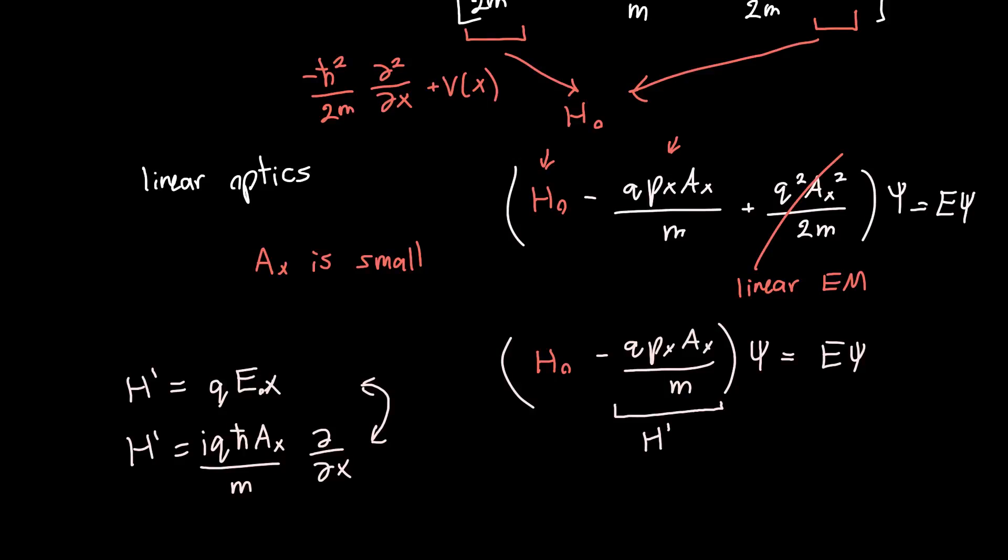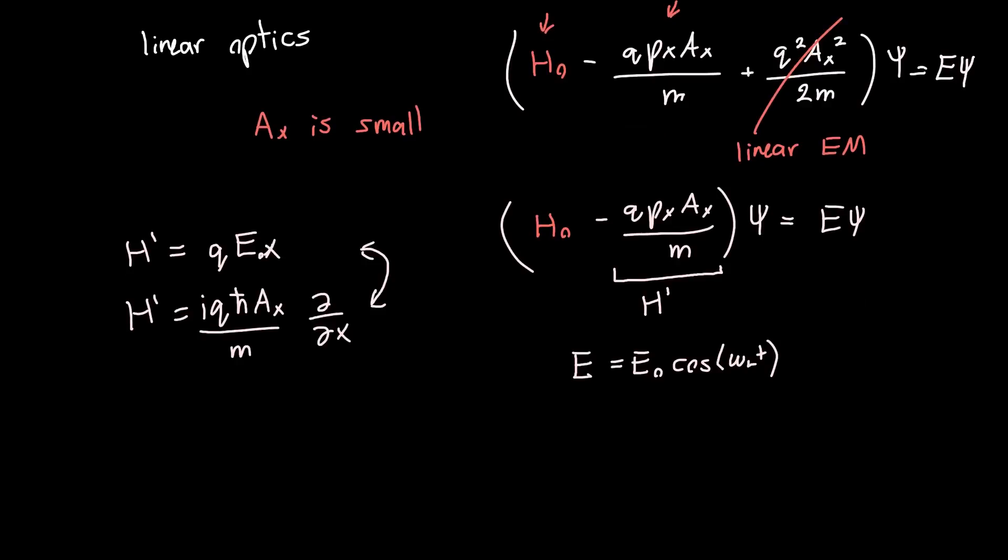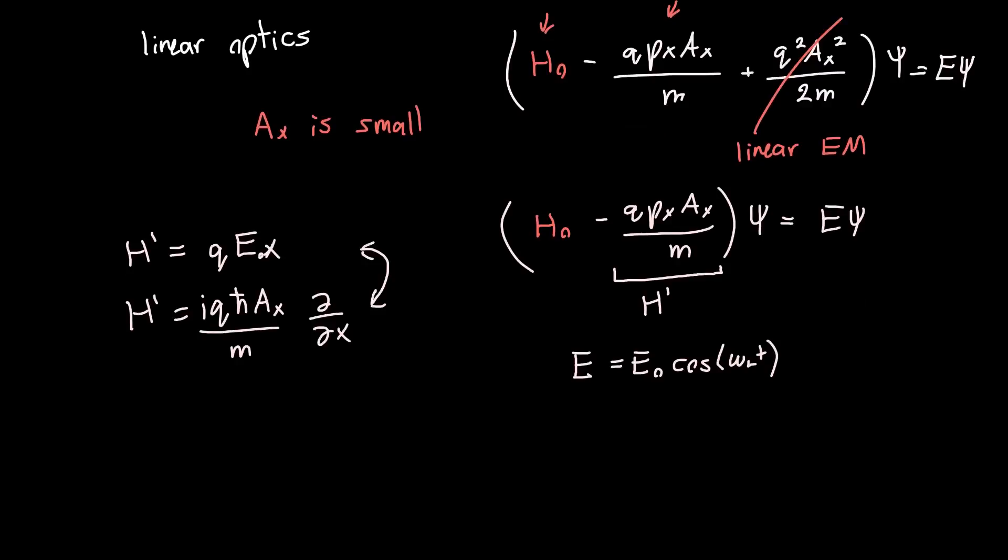And if we assume the electric field and the vector potential are sinusoidal in time, so our electric field is just E₀ times some cosine of ωₗt, then our vector potential is going to be the integral of this and is of the same exact form. So it's just A₀ times cosine of ωₗt. And let's say that these are both in the x direction so that we don't have any trouble with the polarization.